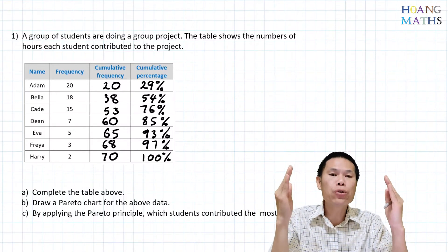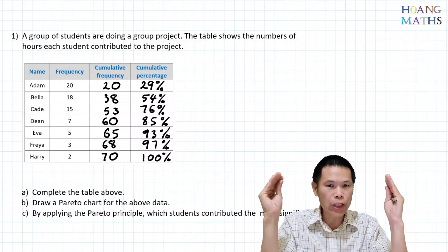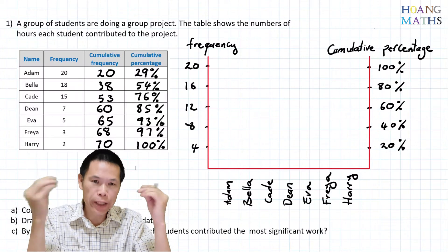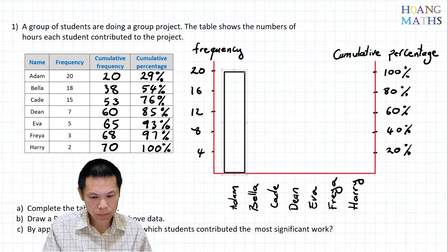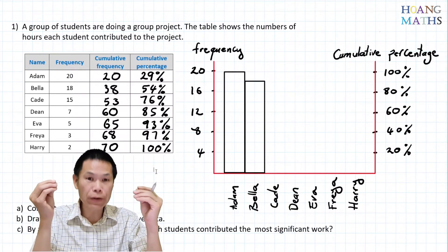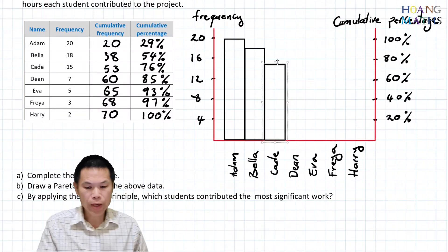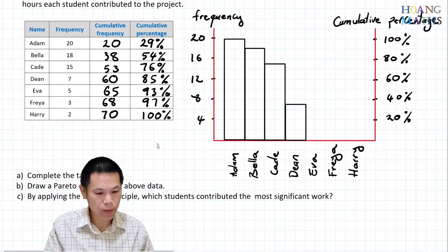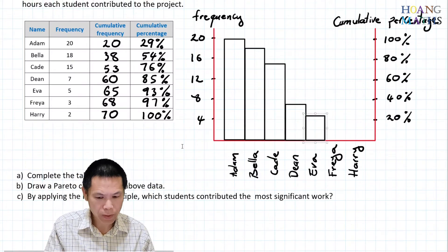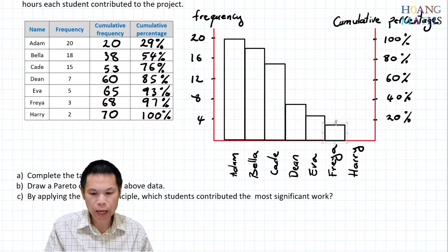Now we draw the Pareto chart. On the left is frequency and on the right-hand side is cumulative percentage. First we draw the histogram. For Adam the frequency is 20, for Bella it is 18. Kate's frequency is 15, which is halfway on the grid. Daniel is 7, so halfway of that grid. Eva is 5, Freya is 3, and Harry is 2.